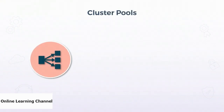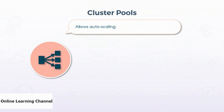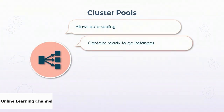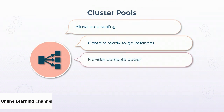Our next topic is cluster pools. Cluster pools allow effective auto-scaling by managing a pool of ready-to-go cluster instances, or nodes that can be used by any clusters associated with the pool. A cluster requires more or fewer nodes as it scales in or out to manage job load. Auto-scaling requires more cluster nodes, and spooling up new cluster nodes is time and resource consuming. So keeping a pool of nodes provides compute power without the spool-up cost. When a cluster has to scale, it requests new nodes from the pool that it belongs to — if it can get nodes from the pool, it can quickly scale.